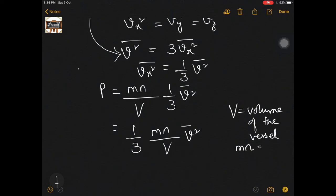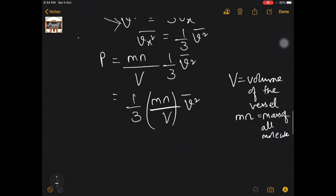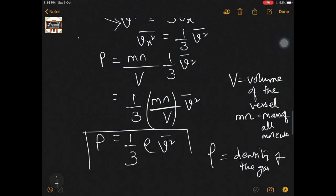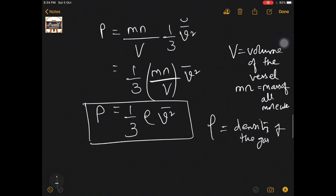If I do m·n divided by V, I will definitely arrive at the density of the gas. So ρ is the density of the gas. Here I have derived the expression for pressure: P = (1/3)·ρ·V̄².